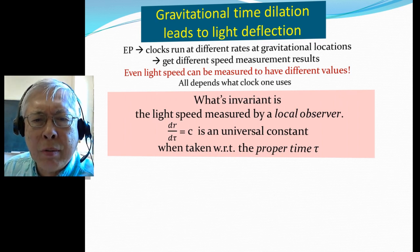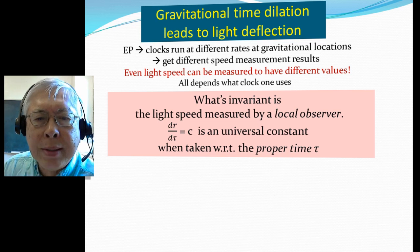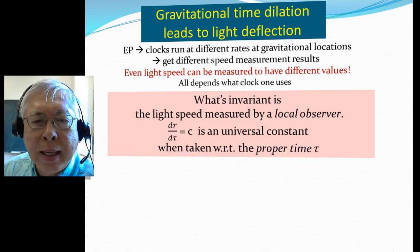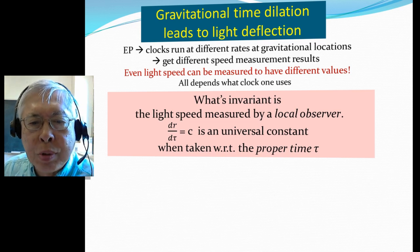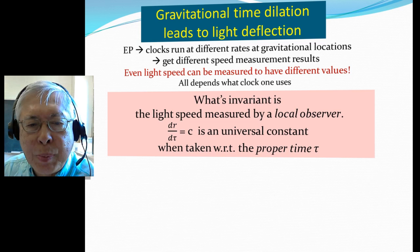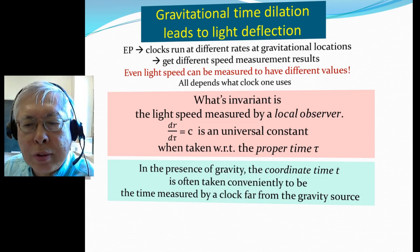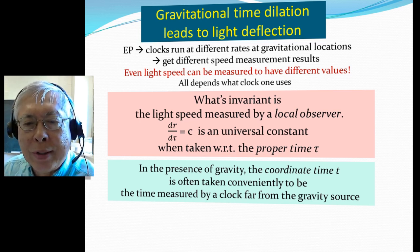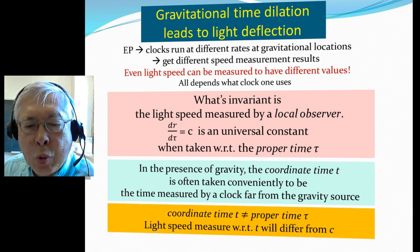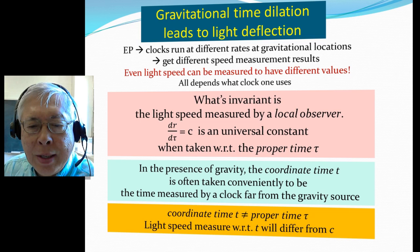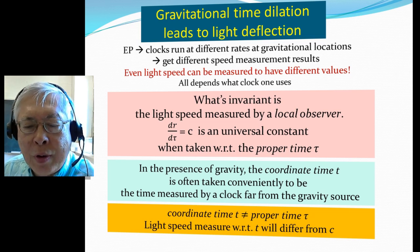Does that mean the speed of light is no longer a fixed number? What is invariant — always true — is that the speed of light as measured by a local observer using proper time is always equal to the universal constant C. In the presence of gravity, the usual time coordinate is chosen to be measured by a clock far away from the source of gravity. So the coordinate time differs from proper time, and speeds measured with respect to coordinate time differ from C.